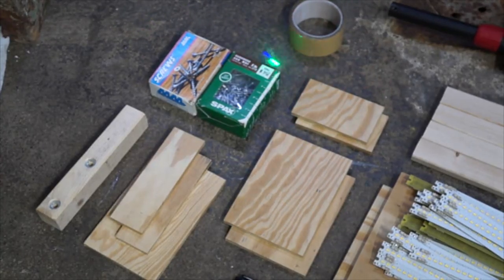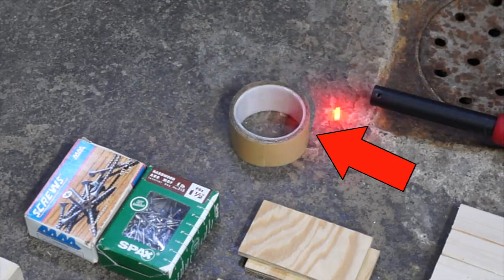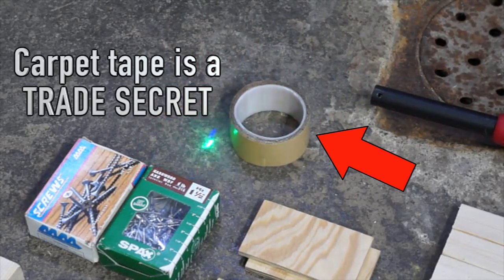Then we'll also need screws to hold the frame together, and finally some carpet tape to keep the LED strips in place while they're being screwed down.